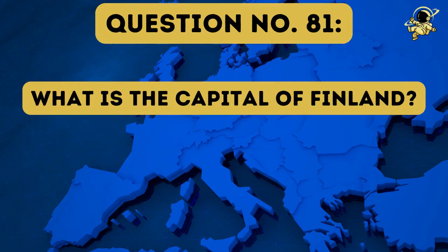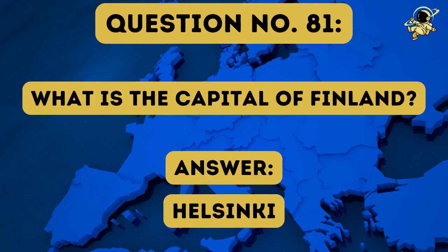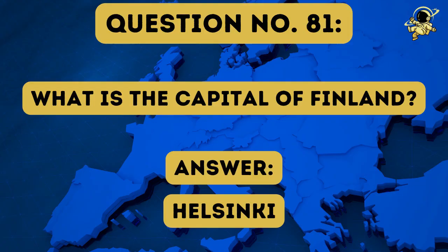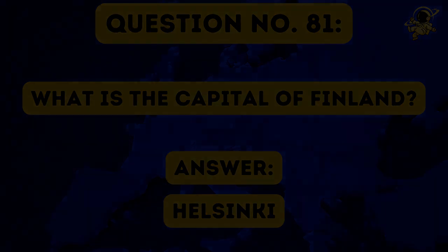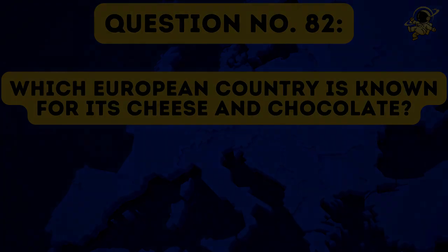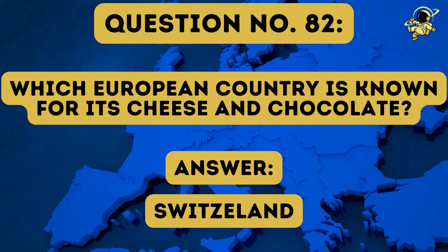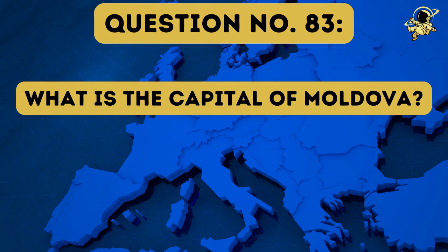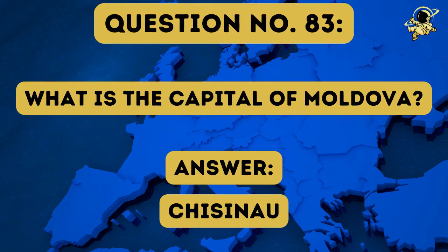Question number eighty-one: What is the capital of Finland? And the answer to question number eighty-one is Helsinki. Question number eighty-two: Which European country is known for its cheese and chocolate? And the answer to question number eighty-two is of course Switzerland — that question we already had. Question number eighty-three: What is the capital of Moldova? The answer to question number eighty-three is Chișinău.